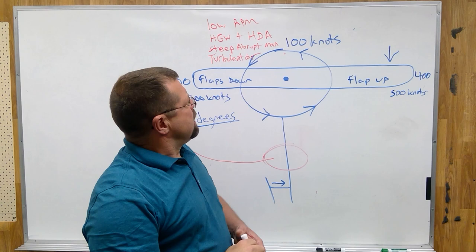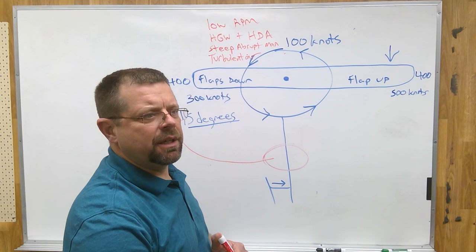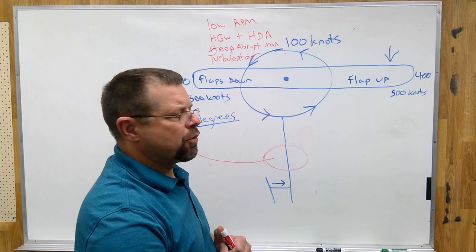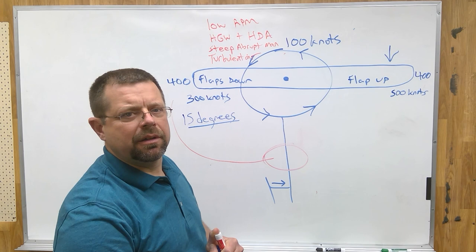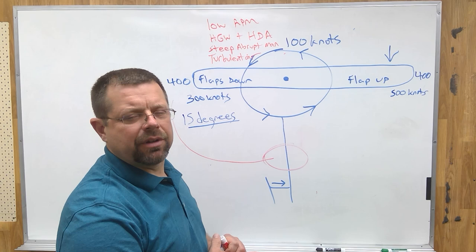Now, the way we correct for retreating blade stall, according to the helicopter flying handbook, is to lower the collective, and then slow the helicopter down by going aft on the cyclic slightly. So the first thing that you do is lower the collective, then slow the helicopter down by pulling back slightly on the cyclic.